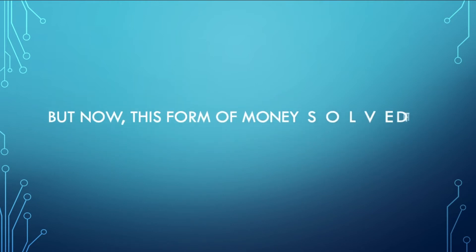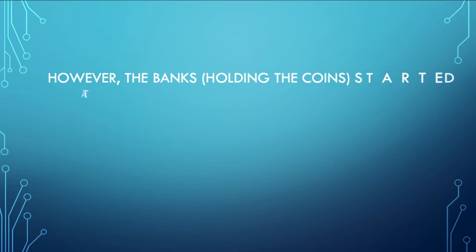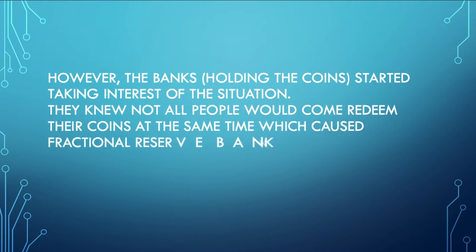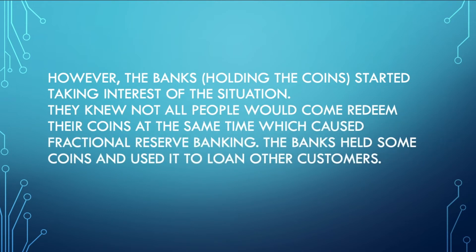But now this form of money solved their problems with gold. However, the banks started taking interest of the situation. They knew not all people would come redeem their coins at the same time, which caused fractional reserve banking. The banks held some coins and used it to loan others.